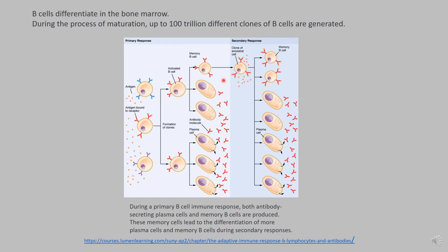After you finish a secondary response, you will generate memory B cells to that second infection. Hopefully this frequency is higher, and you will generate memory B cells and antibodies that see different portions of the same pathogen.